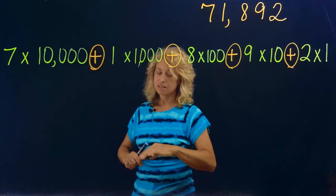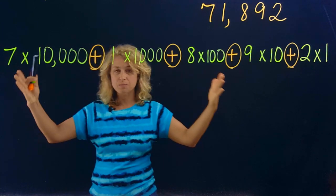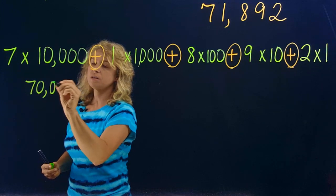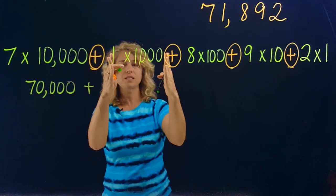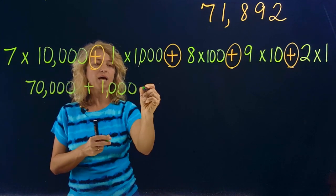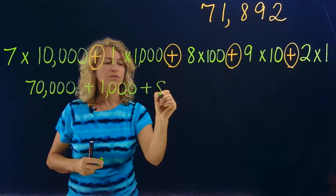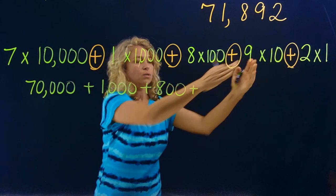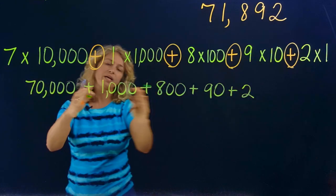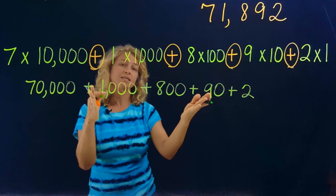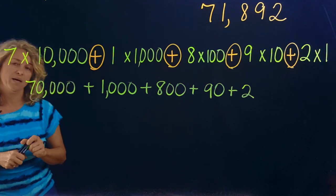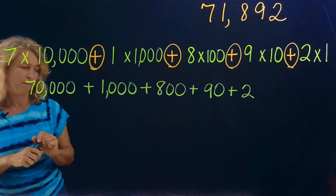Notice we have a plus sign between each term. Basically it's the same as the old way, only expanded even further. Seven times ten thousand equals seventy thousand, one times one thousand equals one thousand, eight times one hundred is eight hundred, nine times ten is ninety, plus two. You can convert it back to check if you are getting this correct.